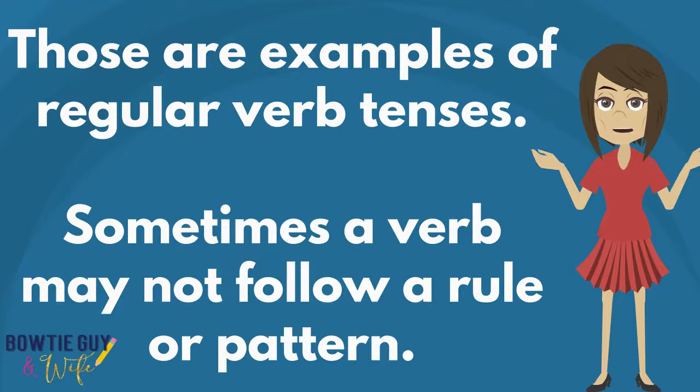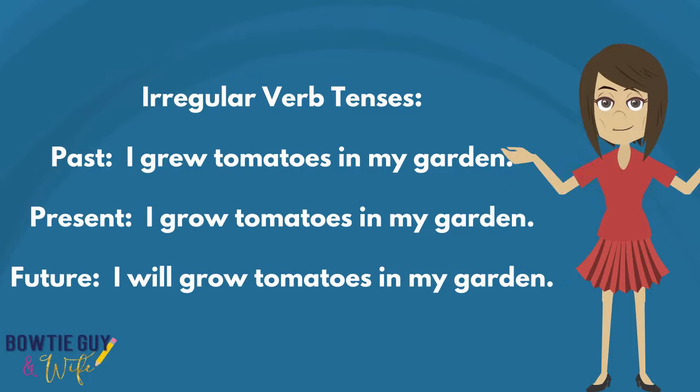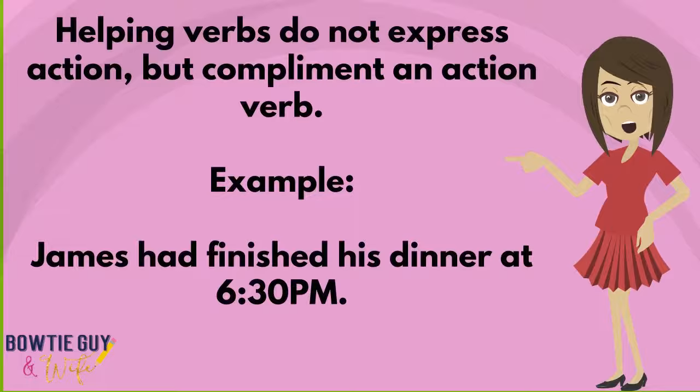Those were all examples of regular verb tenses. However, sometimes a verb may not follow the rules or a pattern. Verbs get a bit trickier in the irregular tense. If I said it in the past: I grew tomatoes in my garden. In the present: I grow tomatoes in my garden. In the future: I will grow tomatoes in my garden. Helping verbs do not express action, but they do complement an action verb. Example: James had finished his dinner at 6:30.